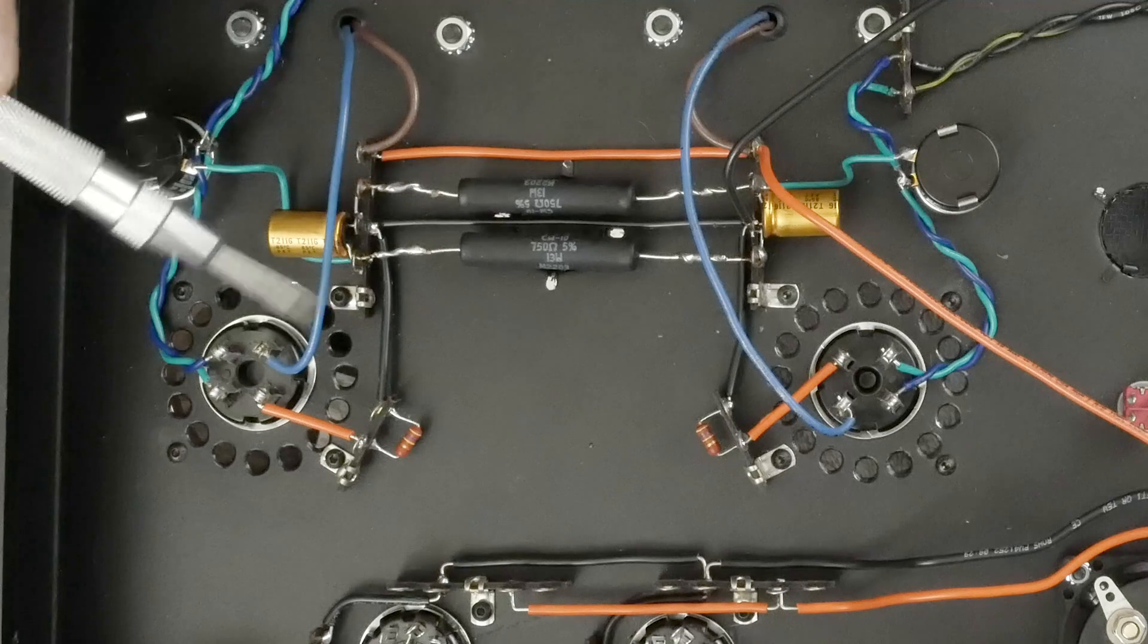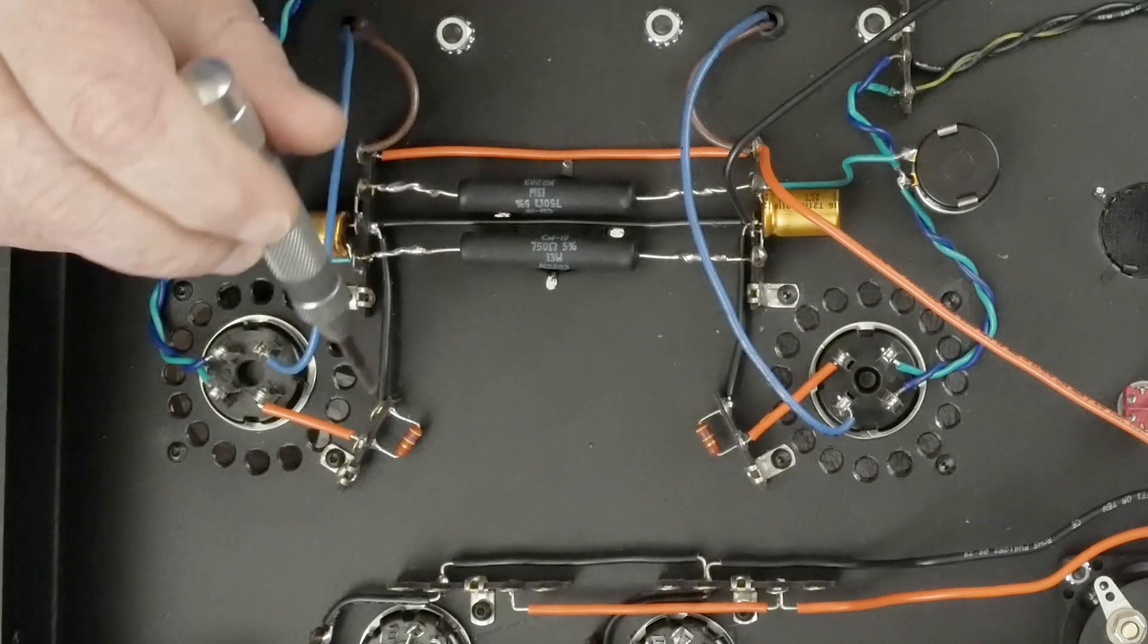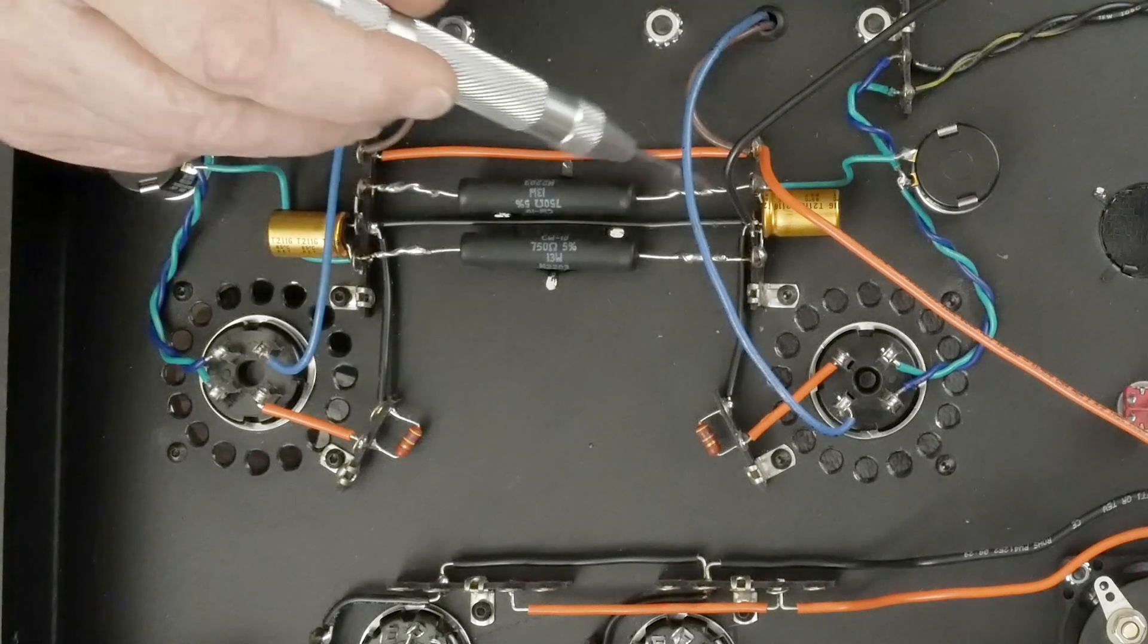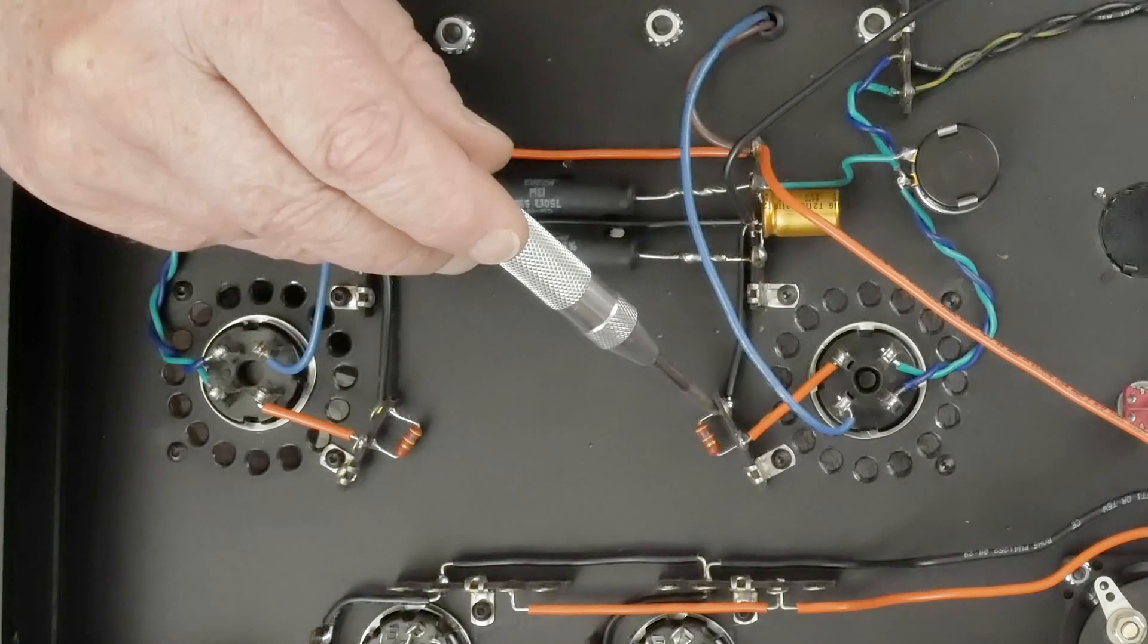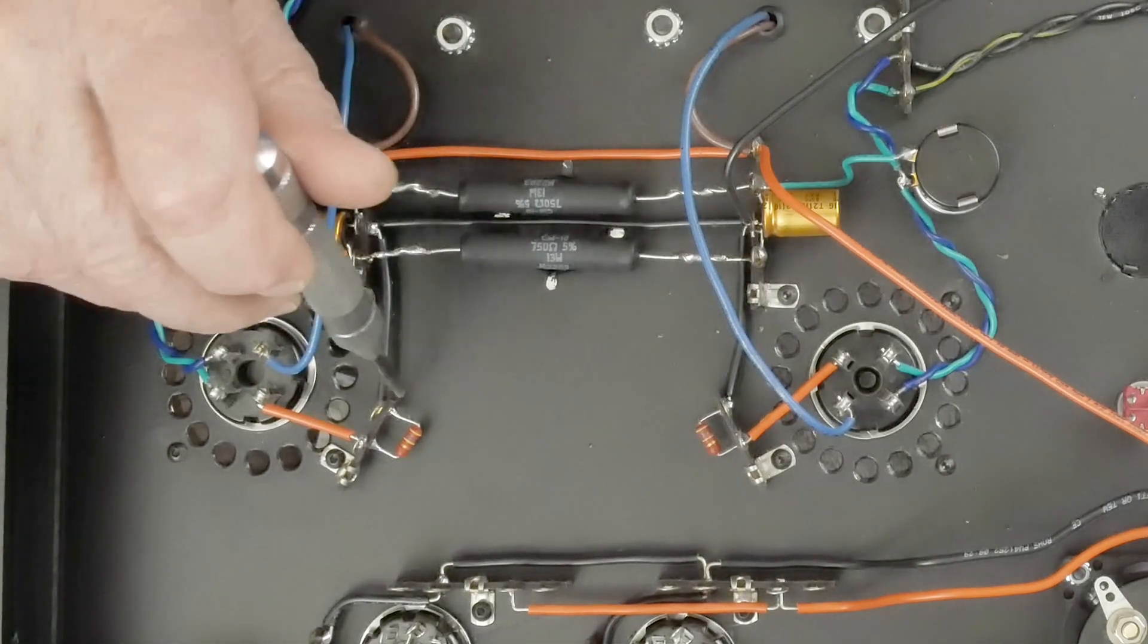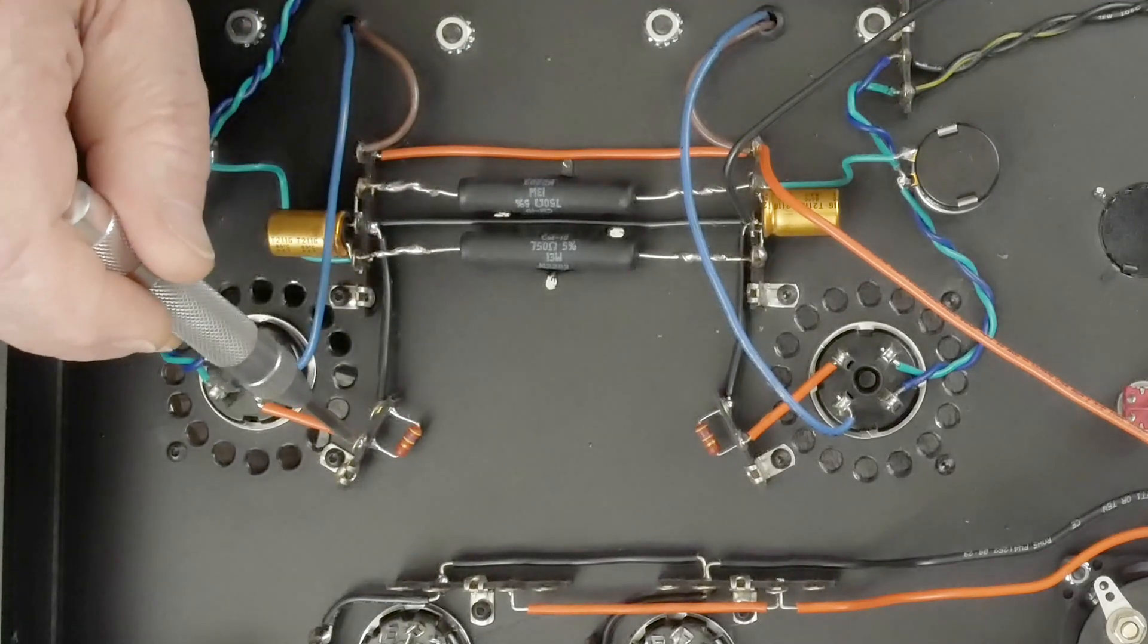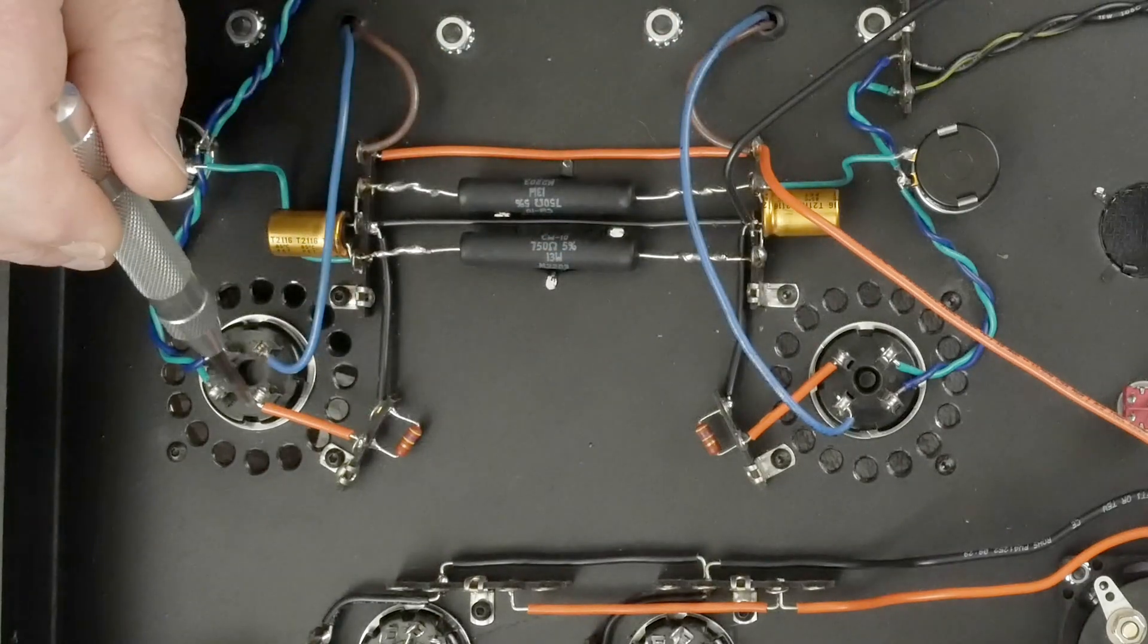On the grid we pulled a ground from here over to this terminal on this tag strip, same thing over here. Then we have our grid leak resistor that goes across there, both sides. This is where the coupling cap hooks up, and then this goes over to the grid.